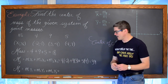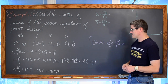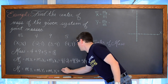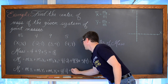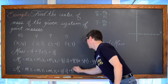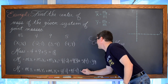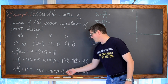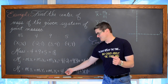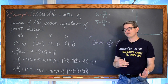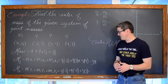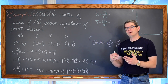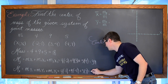The moment about the x-axis: take each mass times its corresponding y-coordinate. We have 4 times −1, plus 9 times −4, plus 5 times 7. That gives −4 + (−36) + 35 = −40 + 35 = −5. So the moment about the x-axis is −5.